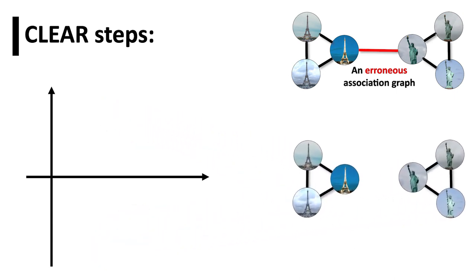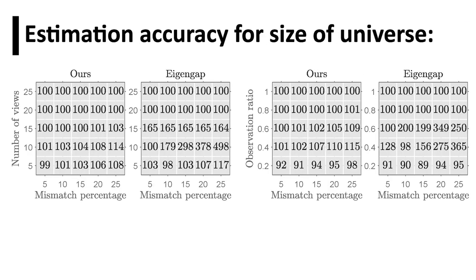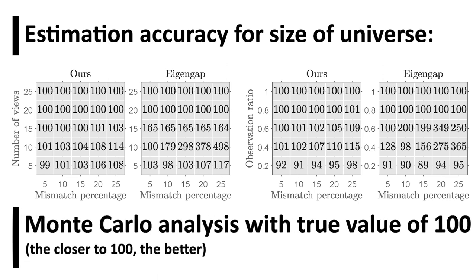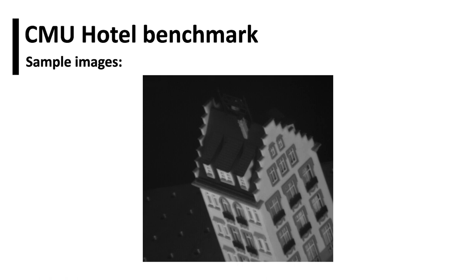During this assignment step, care is taken to ensure items in the same view are not associated. We compare the estimation accuracy of CLEAR with the standard eigen-gap method for estimating the size of the universe. Our Monte Carlo analysis with different percentage of association error, number of views, and observation ratios show the higher accuracy of CLEAR estimates. We benchmarked the CLEAR algorithm on the CMU Hotel dataset.